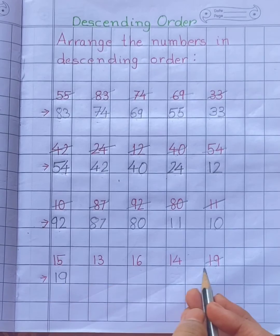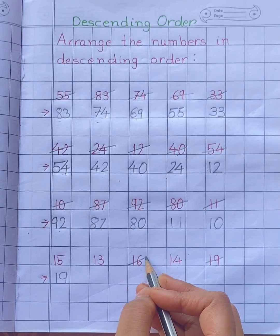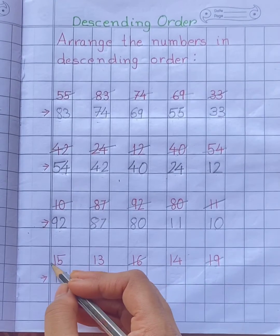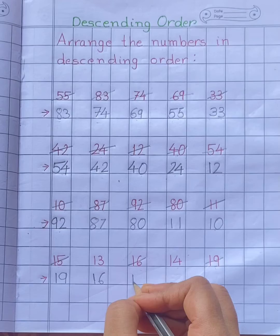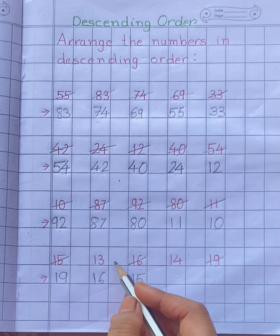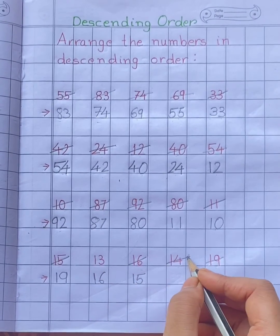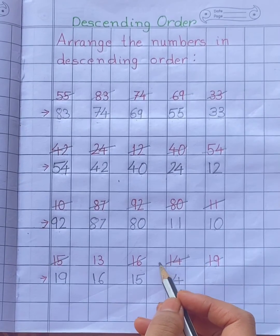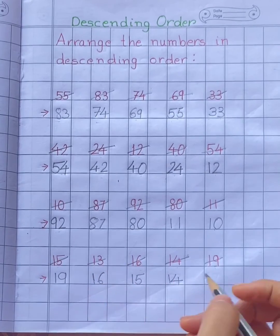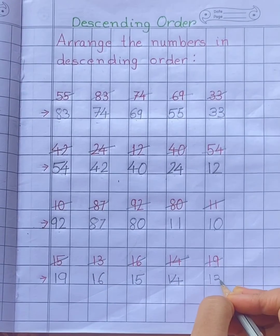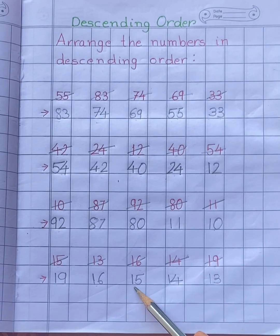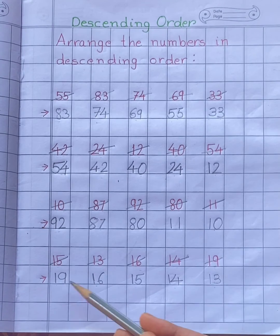After 19 comes 16, then 15, then 14, and the last smallest number is 13. So the descending order is: 19, 16, 15, 14, 13. Big to small.